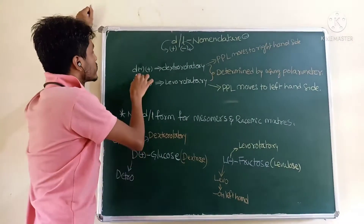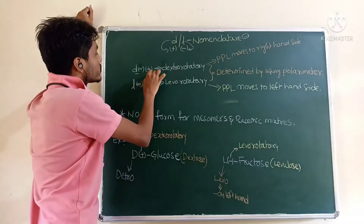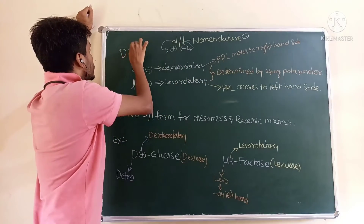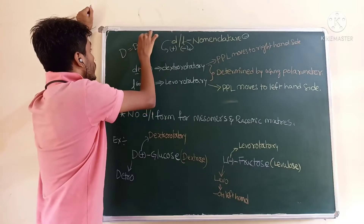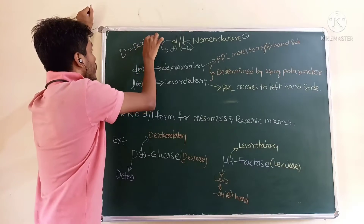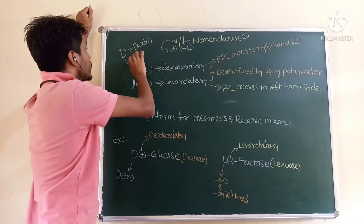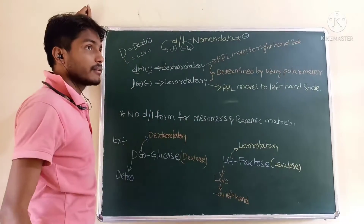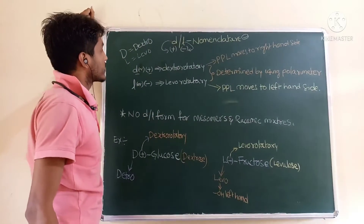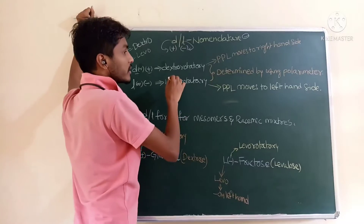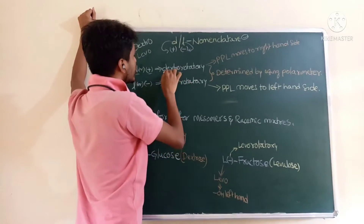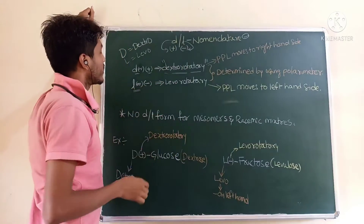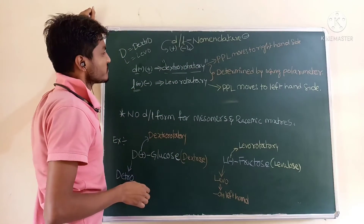Small d indicates a positive charge — d indicating dextrorotatory. Capital D means dextro, and capital L means levo. In the case of small d and small l: small d indicates dextrorotatory, and small l indicates levorotatory.